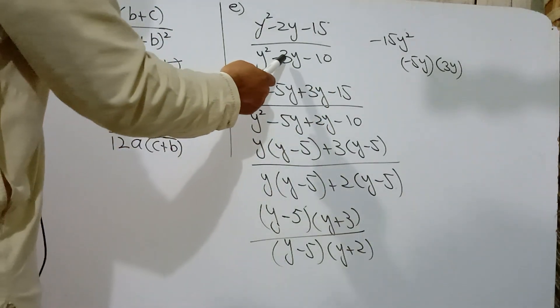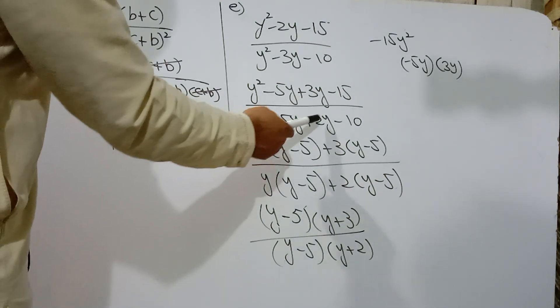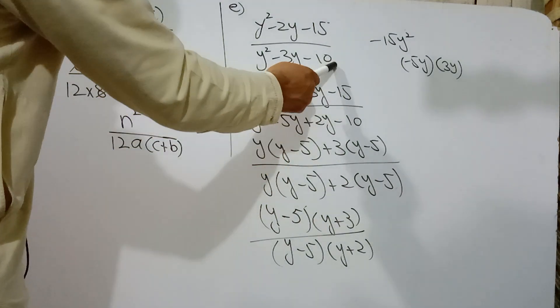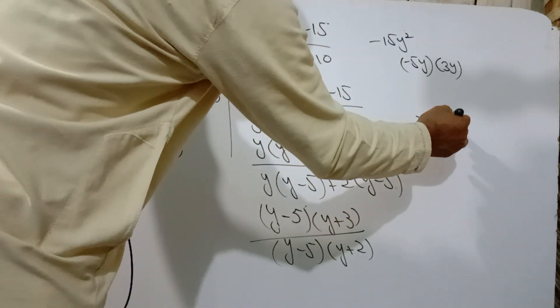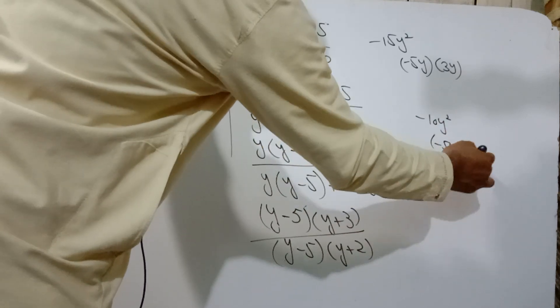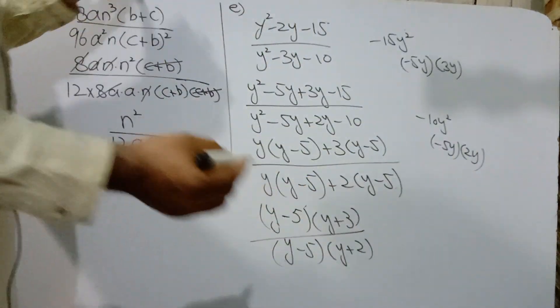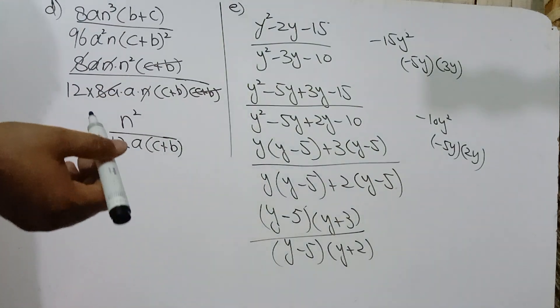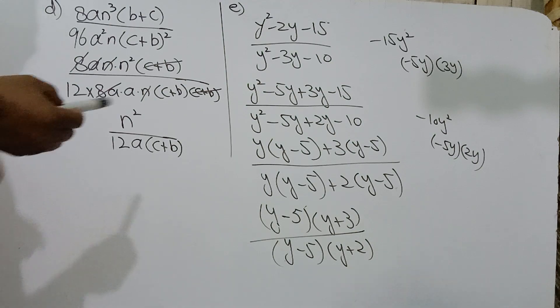Similarly y² - 3y - 10. y². 5×2 is 10. y² - 5y. 2y. 5×2 is 10. 5 - 2, -5 + 2 equals 3y.